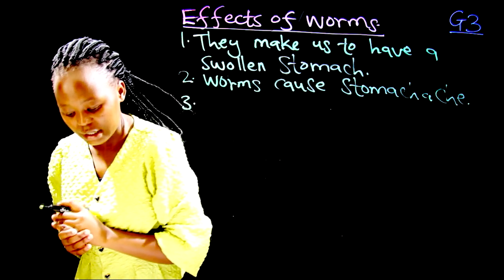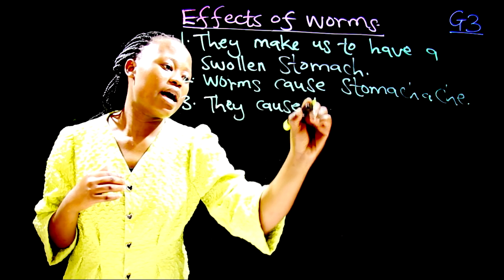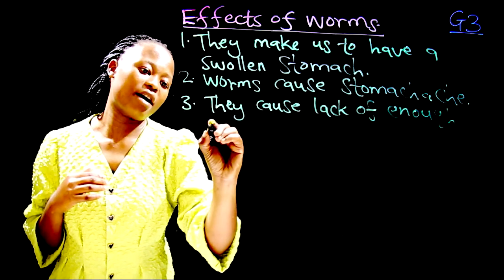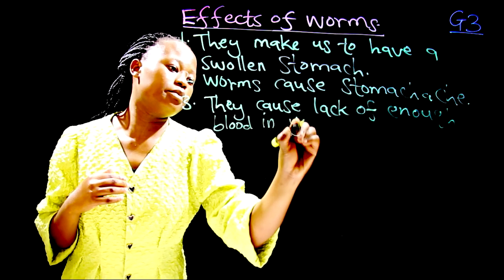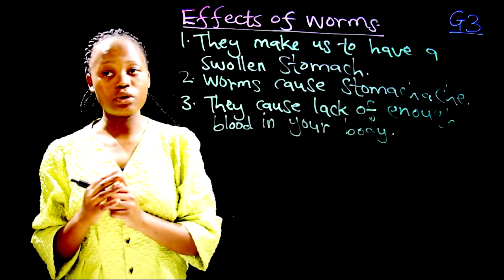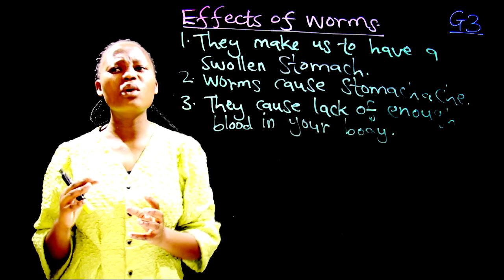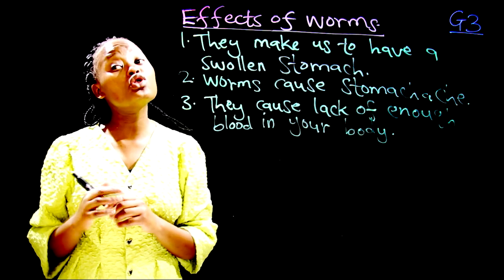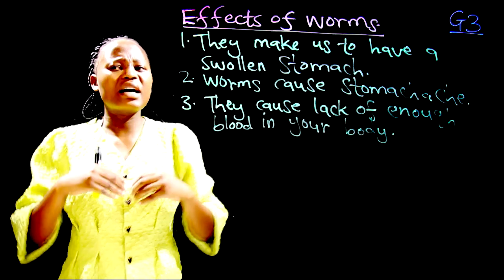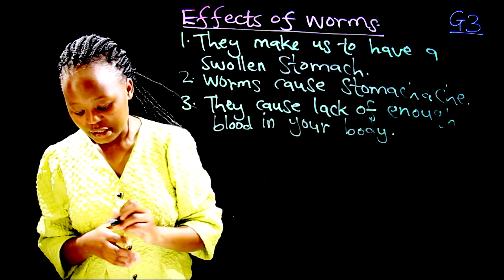Effect number three: worms cause lack of enough blood in your body. These worms depend on and suck your blood. When they suck your blood you lack enough blood, which makes you grow thin and lack energy.